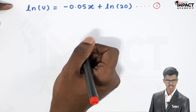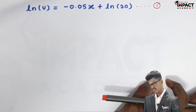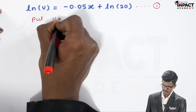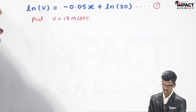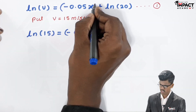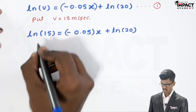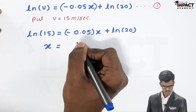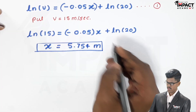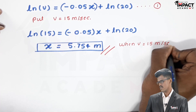In the question, they ask to find x at v equal to 15 meter per second. We have the equation of velocity in terms of x, so we simply substitute v equals 15. We get ln 15 equals minus 0.05 x plus ln 20. Solving this equation, we get x equal to 5.754 meters. This is our first unknown when v equals 15 meter per second.